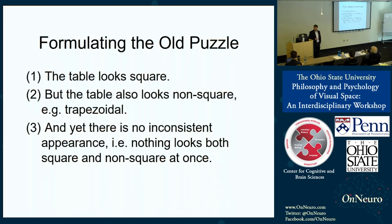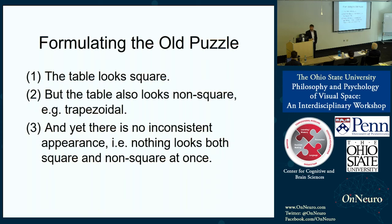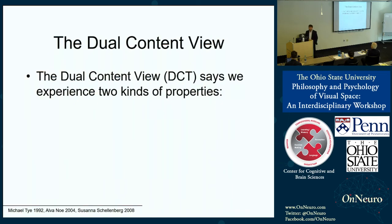The puzzle is problematic because if you reject one of those claims to avoid inconsistency, you violate one of our desiderata. If you reject the first claim as Russell did — denying that the table looks square — then you haven't done justice to the constant aspects in perceptual experience. If you deny the second claim as Christopher Peacock does — denying that the table looks in any sense trapezoidal — then it's hard to see how you do justice to the variable aspects. And if you say the table looks both square and non-square, you violate the consistency desiderata.